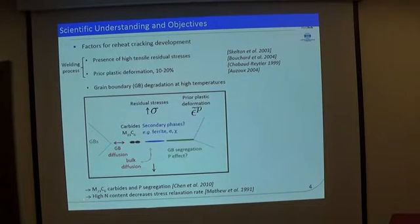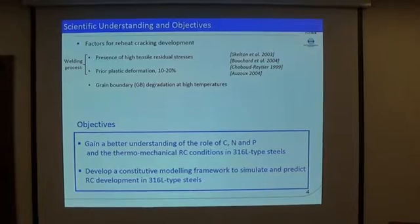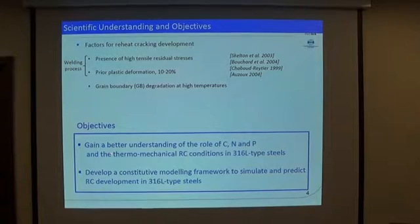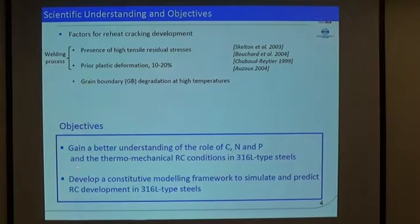And something else one needs to know is that high nitrogen content leads to a decrease of stress relaxation rate when you use your alloy. So you will stay longer time at high stresses. Okay, so the objectives here are to gain a better understanding of the roles of alloying of these elements, carbon, nitrogen, and phosphorus on the thermomechanical preheat conditions, and to develop a constitutive modeling framework to simulate and predict this damage.